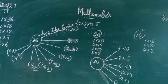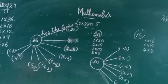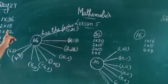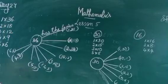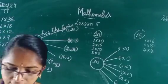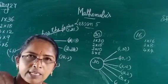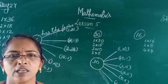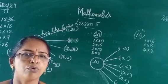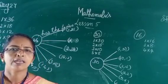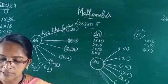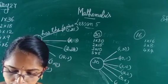The factors of 36 are 1, 2, 3, 4, 6, 9, 12, 18, and 36. For 23, it has only two factors: 1 and 23. The remaining questions — 32 and 20 — are for homework.